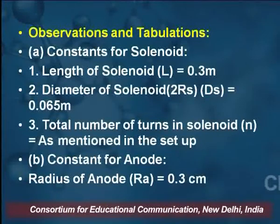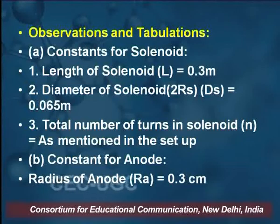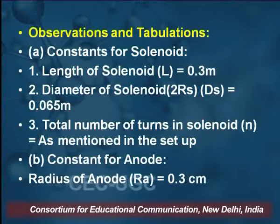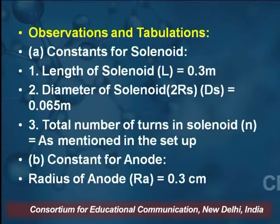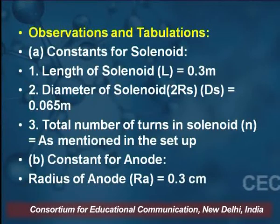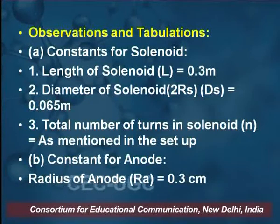In the observation table, we calculate some constant values which are given and customized through this apparatus. The length of the solenoid is given as 0.3 meter. The diameter of the solenoid Ds is equal to 0.065 meter. The total number of turns in the solenoid depends upon the setup and is mentioned in the setup.